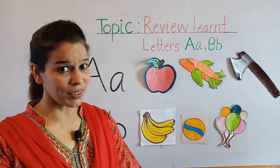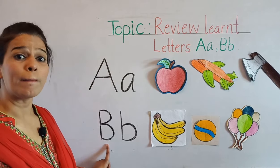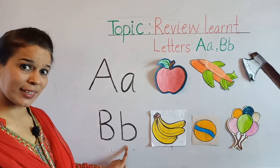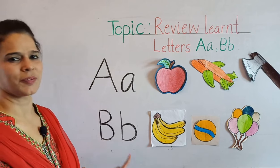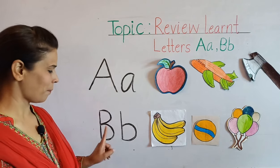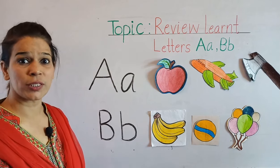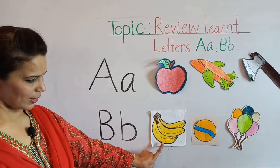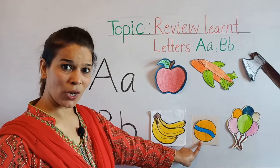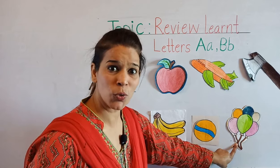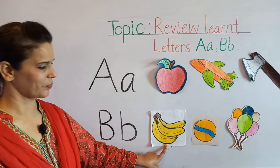Very good! Now, the second letter - what is the name of the letter B, and what is the sound of the letter B? Say 'B', 'B'. Very good, one more time - 'B', 'B'. Now let's see which words start with the B sound. Here are the words: banana - 'B', ball - 'B', balloon - 'B'.